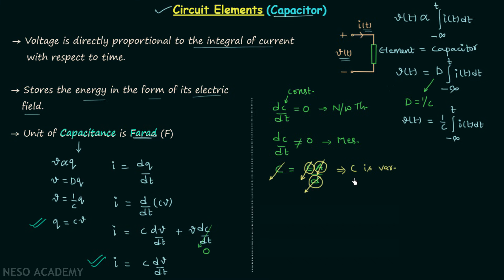Whenever C is variable, the time rate of change of C will not be equal to zero. So remember this important point that dc/dt is not always equal to zero.